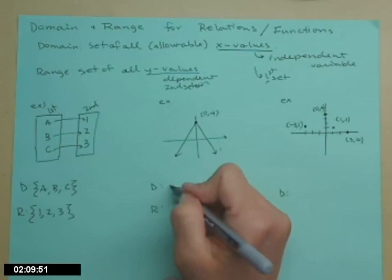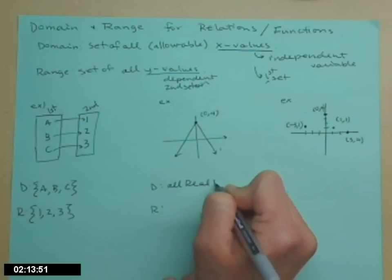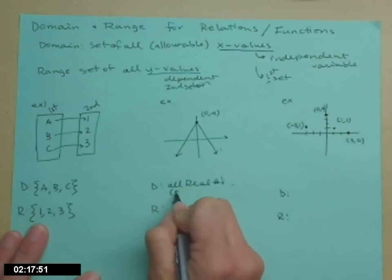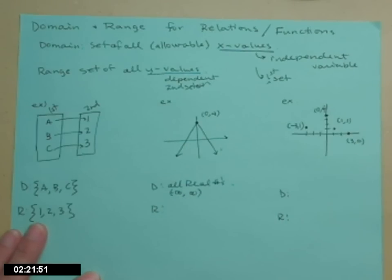You just have to be patient, but eventually we will get to all the real numbers, all of the x values. In interval notation, we would write negative infinity to positive infinity.